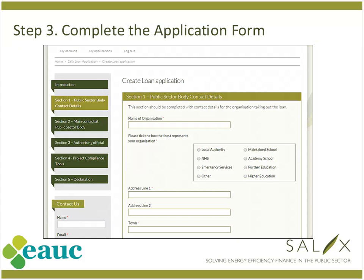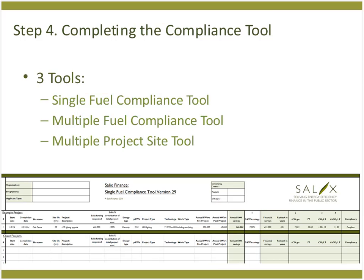Step 3 is completing the application form itself. It's very straightforward — it requires contact details for the person applying on behalf of the college, who will be our main point of contact during the project, and also the contact details for the authorising official at the institution, such as the principal or director of finance — essentially anyone with authority to sign a direct debit mandate. Once submitted online, an automatic email goes to the authorising official asking them to acknowledge the application submitted on the college's behalf and give their approval by replying to that email. Step 4 is the compliance tool, which looks quite technical but is actually very simple — Matt will explain this in more detail.